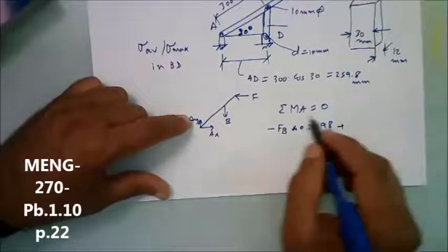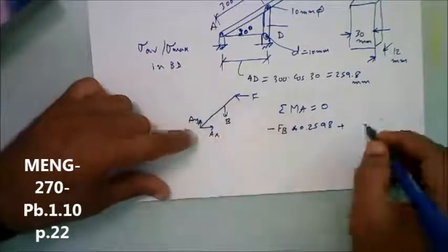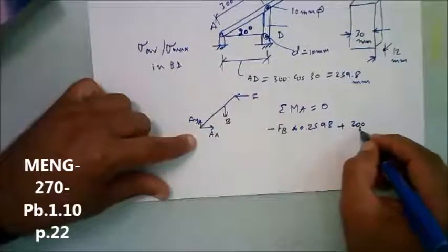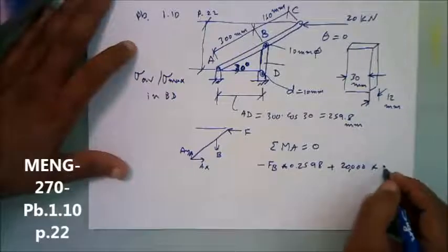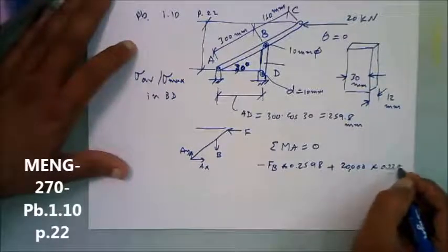Plus the reaction of the other force is positive, 20,000. What would be this distance? This is 0.225.